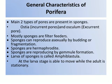General characteristics of Phylum Porifera: they have two main types of pores. Ostia are known as incurrent pores because water enters the body of Porifera through them. Osculum are known as excurrent pores because undigested food or excess water is removed out from the Porifera through them.